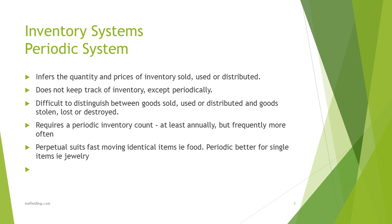The alternative to a perpetual system is a periodic system, where you have a physical stock count at some point in time. Computer technology has moved on significantly since most textbooks were written, and perpetual systems have largely taken over. However, periodic systems still exist, particularly for items that are not so critical or high-risk.